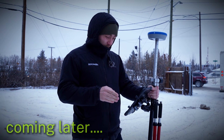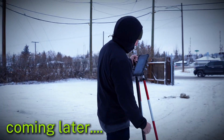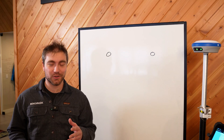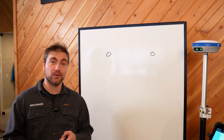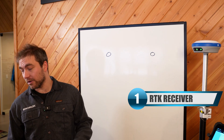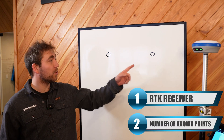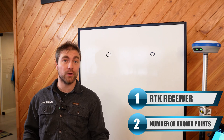I'm going to take you guys out into the parking lot and show you step by step how to do one in Field Genius. To do a localization, you're going to need a few things: your RTK receiver needs to have a fixed solution at all the points, and you're going to need a number of known points in the real world that you know the coordinates of.